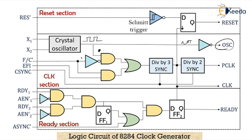The F/C (frequency or crystal select) pin is used to select the input of the oscillator. When its input is high, the operating frequency is determined by the external frequency input EFI. Otherwise, it is determined by the crystal oscillator. Through the AND gate, the output of the oscillator is fed to the divide-by-3 counter.